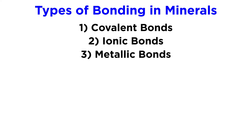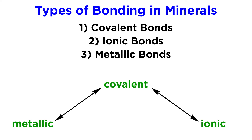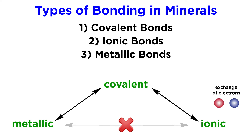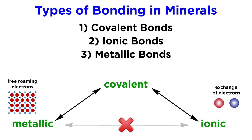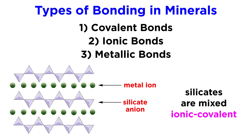It is important to note that chemical bonds occur along a spectrum, with metallic, covalent, and ionic being end-members, or distinctive types of bonding. There is a complete spectrum of bonding ranging from pure metallic to pure covalent, as well as from pure covalent to pure ionic. It is not possible to have a bond that is mixed ionic and metallic in nature, as they are not compatible. Ionic bonds involve the creation of cations and anions by an exchange of electrons between atoms of contrasting electronegativity, whereas bonding between metals involves free-roaming valence electrons traveling between atoms of near-identical electronegativity — they are essentially mutually exclusive. Most of Earth's minerals are composed of metals bonded to silicate anions, and the nature of these bonds is mixed ionic-covalent.